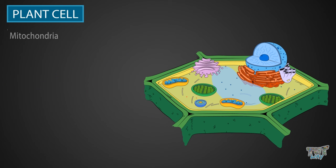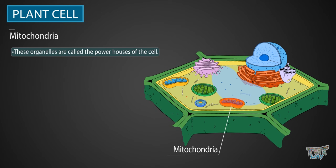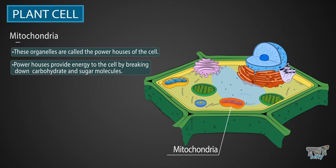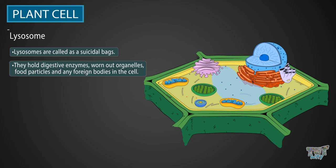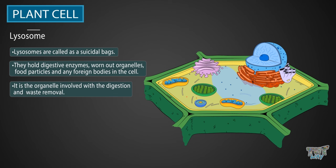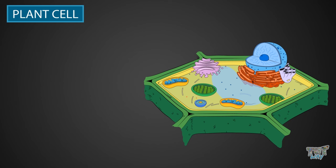Next is mitochondria. These organelles are called powerhouses of the cell — they provide energy to the cell by breaking down carbohydrates and sugar molecules. Next we have the lysosome. Lysosomes are often called the suicidal bags. They digest excess or worn-out organelles, food particles, and also engulf viruses, bacteria, or any foreign bodies in the cell. So, it is the organelle involved in digestion and waste removal. We have learned the basic and important organelles of a plant cell, but there are many more organelles in the cytoplasm that we will study in our higher grades. Thank you.